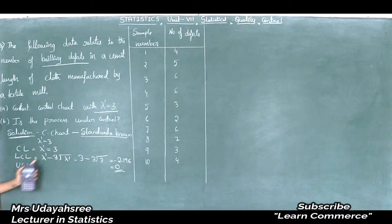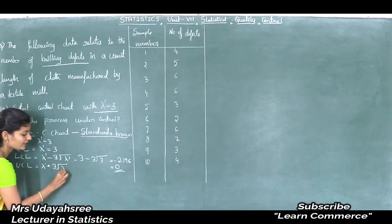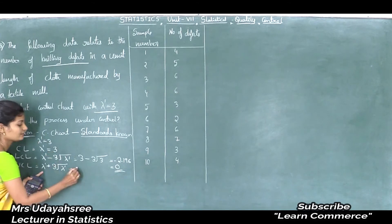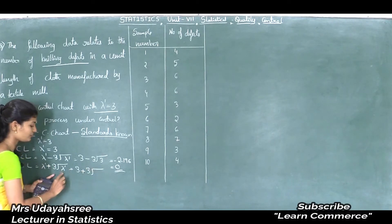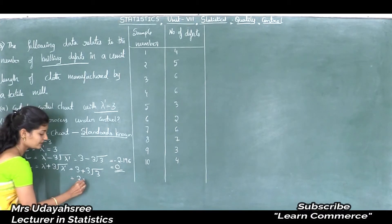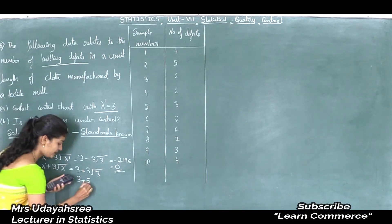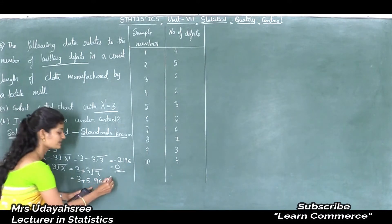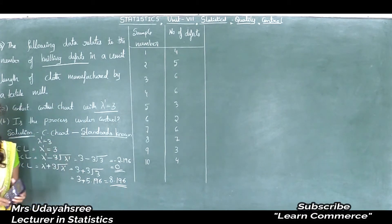To calculate the upper control limit of the C chart in the standards known case, the formula is lambda dash plus 3 into square root of lambda dash. Lambda dash is 3, so this equals 3 plus 3 into square root of 3, which is 3 plus 5.196, giving 8.196. These are the control limits of the C chart in the standards known case.